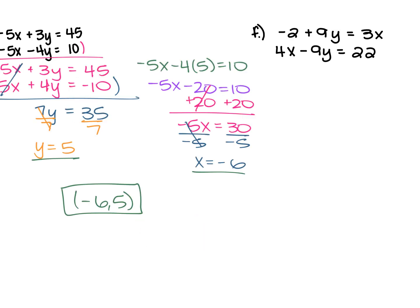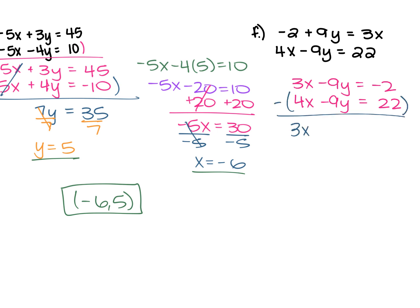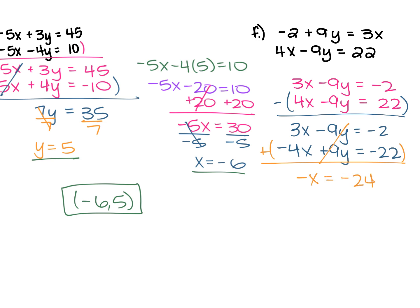For our last example, we have negative 2 plus 9y equals 3x, and 4x minus 9y equals 22. For the top equation, move the 9y over by subtracting it from both sides, giving 3x minus 9y equals negative 2, as well as 4x minus 9y equals 22. Same signs and same coefficients for y, so subtract. The top equation stays the same. The bottom becomes negative 4x plus 9y equals negative 22. Add the two equations: the y's cancel and you're left with negative x equals negative 24. Divide each side by negative 1 and x equals positive 24.